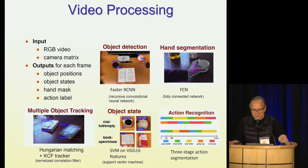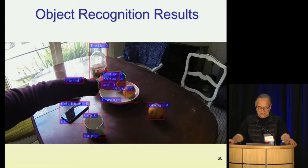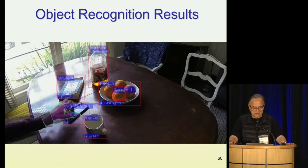This shows the object detection part — it's detecting objects and object states. For example, it knows that the cup is empty, it knows that the cell phone is off, and it's keeping track of how many oranges are in the bowl.